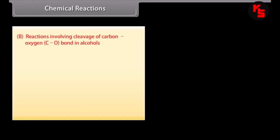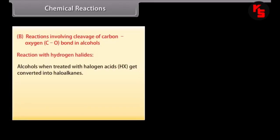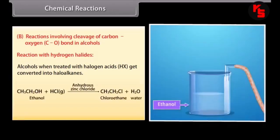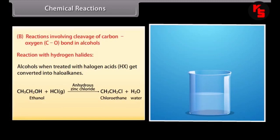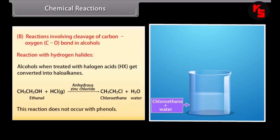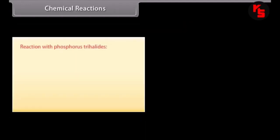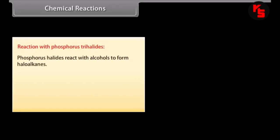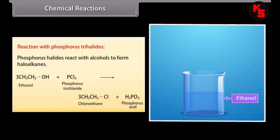Reactions involving cleavage of the carbon-oxygen bond in alcohols — reaction with hydrogen halides: alcohols when treated with halogen acids are converted into haloalkanes. When hydrochloric acid gas is passed through ethanol in the presence of anhydrous zinc chloride, it forms chloroethane and water. This reaction does not occur with phenols. Phosphorus halides react with alcohols to form haloalkanes; for example, phosphorus trichloride reacts with ethanol to form chloroethane and phosphorous acid.